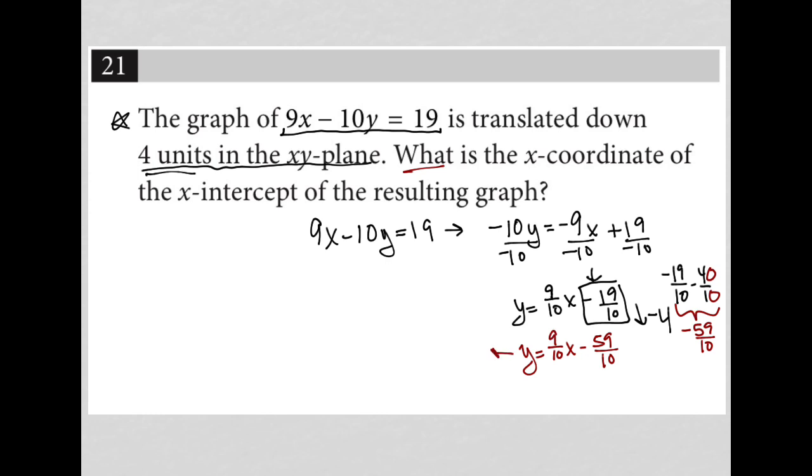We find the x-intercept by setting y equal to zero. So in doing that, I'll just go up here for more space. This equation that started off as y equals 9 tenths x minus 59 tenths will become zero equals 9 tenths x minus 59 tenths.